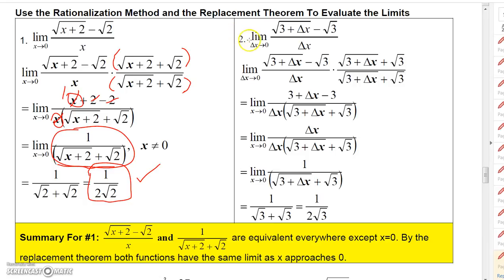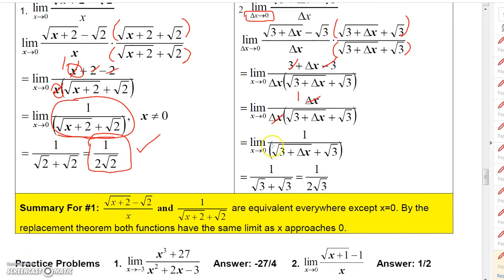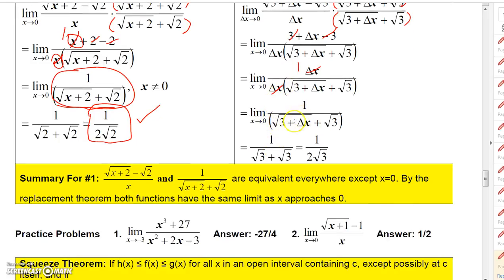There's a similar example using Δx instead of x, but the concept is the same — rationalize the numerator, multiply the denominator by the same conjugate, and the matching terms cancel. You end up with Δx/Δx = 1, and letting Δx go to 0 gives 1/(√3+√3) = 1/(2√3).